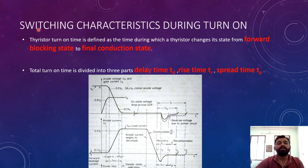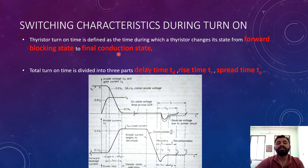We will now learn the switching characteristics during turn on. The thyristor turn on time is defined as the time during which a thyristor changes its state from forward blocking state to forward conduction state. The total turn on time is divided into three parts: delay time TD, rise time TR, and spread time TP.